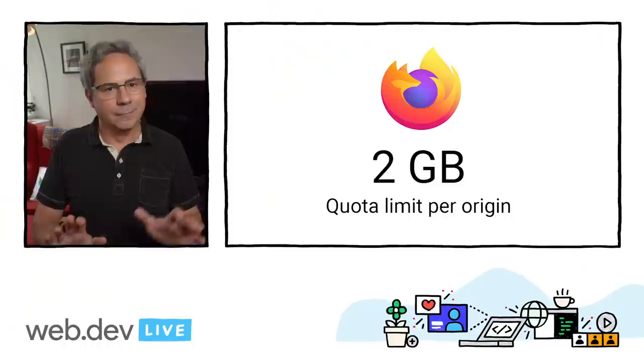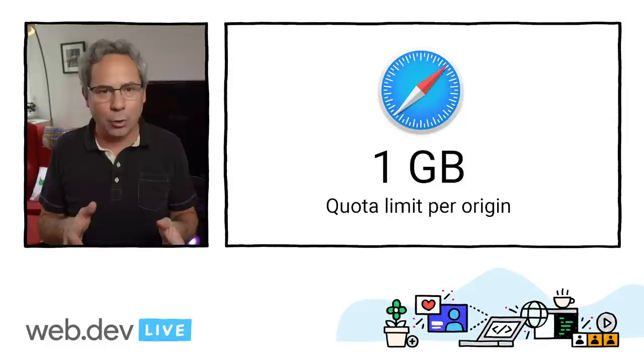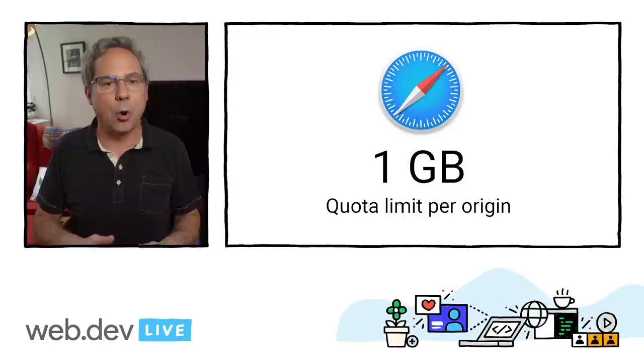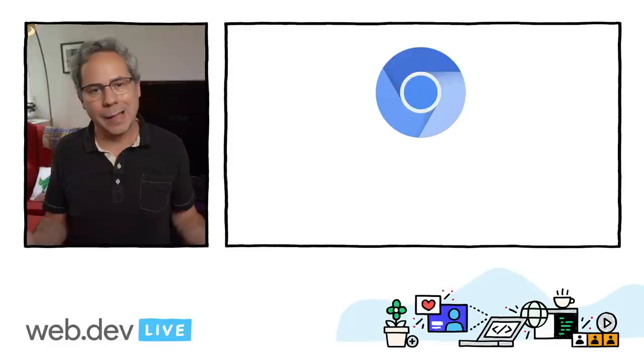If you're concerned about storing large amounts of data on the client, don't be. Unless you're trying to store several gigs, modern browsers typically won't even bat an eye. And even then, it really comes down to the amount of disk space available on the device. Of course, implementations vary by browser. Firefox allows an origin to store up to two gigs. Safari allows an origin to use up to one gig, and when that limit is reached, Safari is currently the only browser that'll prompt the user to increase that limit.